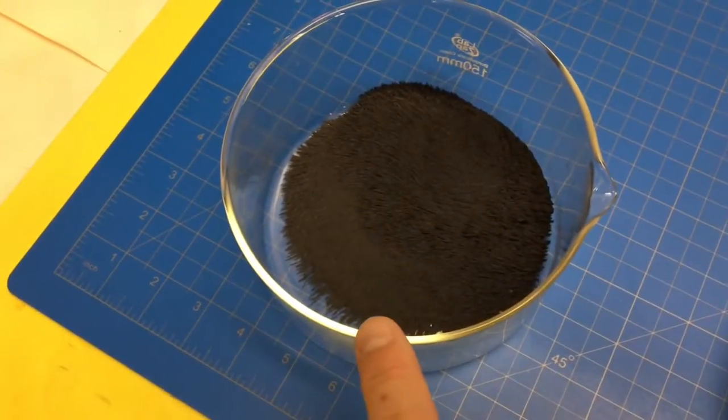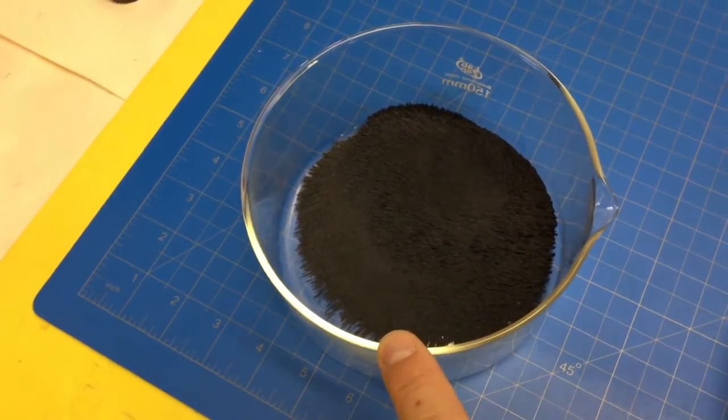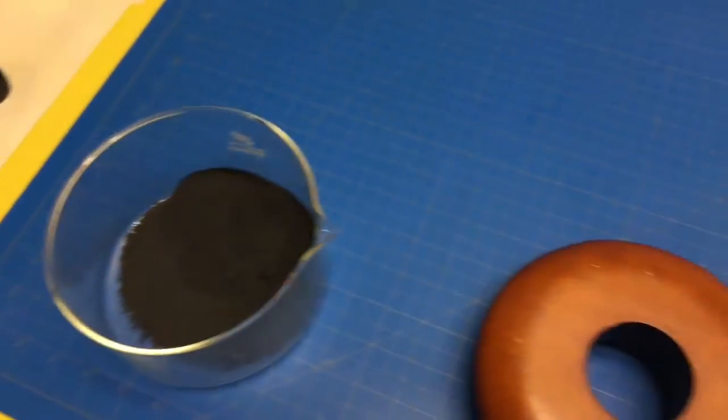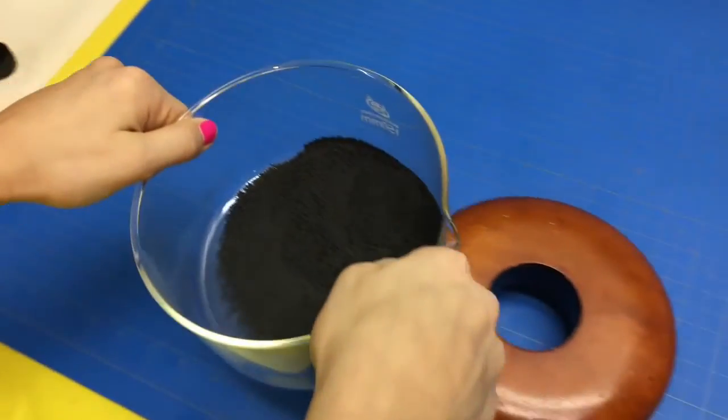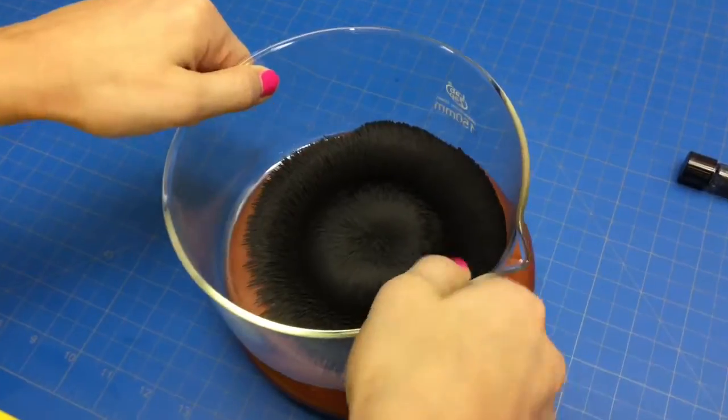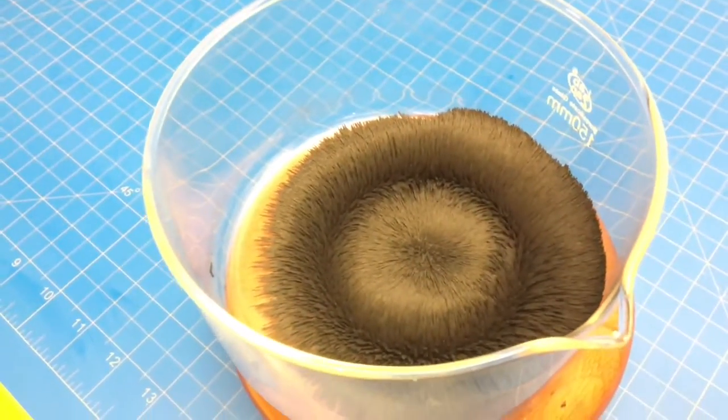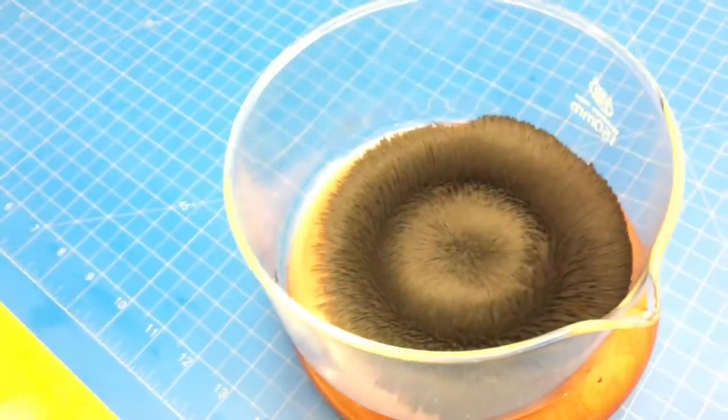All right, now check out what me and Ryan did. We threw some iron oxide in there, but watch what happens when you put it on the Levitron. That looks like a furry animal. Slide this back and forth a little bit and watch what happens.